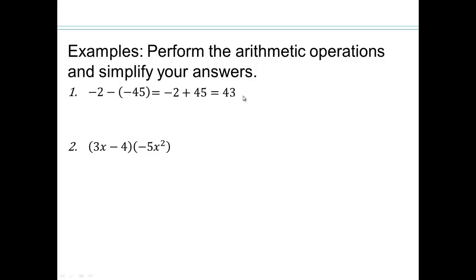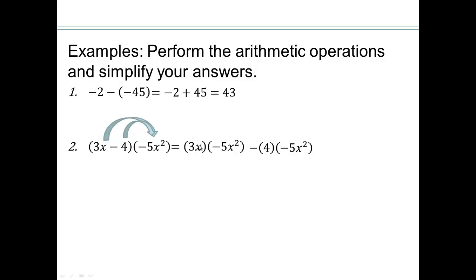Try that on your own. So, distributive property of multiplication over subtraction. What happens when you multiply here? x times x squared gives me x to the third. 3 times negative 5 will give me negative 15, so it will be negative 15x to the third. Negative 4 times negative 5 will give me positive 20x squared. And then nothing we can do because these are unlike terms, so leave it.